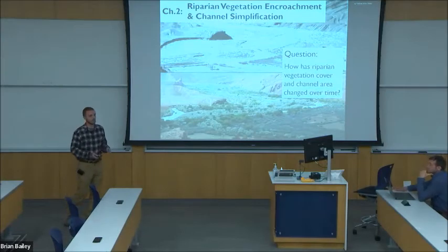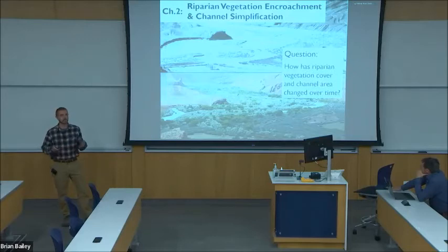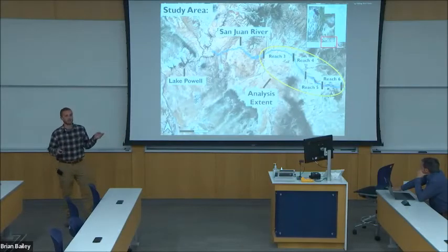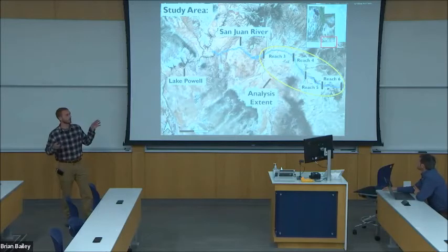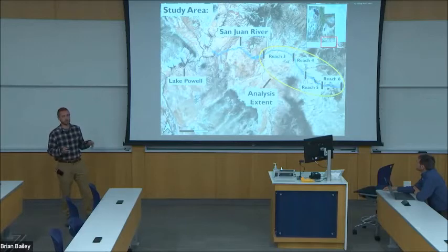I'll now move into the second chapter of my thesis, which seeks to answer the question: how has riparian vegetation cover and channel area changed over time? River managers have split the San Juan River into eight distinct geomorphic reaches. This analysis will include reaches three through six, because in other reaches the river is confined by either the canyon or by artificial man-made structures.